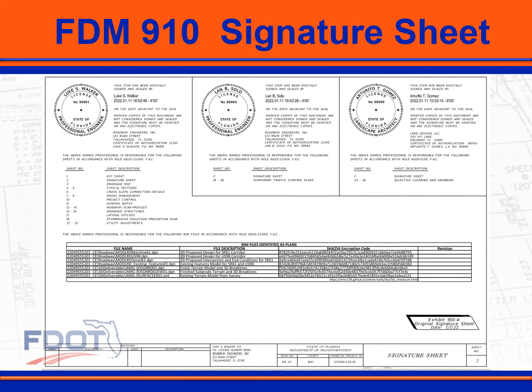A manifest for BIM files identified as plans has been added to the signature sheet. The manifest provides the file name and description along with an encryption code. The CAD manual provides instruction for new tools to support this process. A new process for post-let revisions made to BIM files is under development and will be released soon. With the delivery of BIM files for earthwork operations beginning with the July 2022 lettings, most projects will require a manifest.